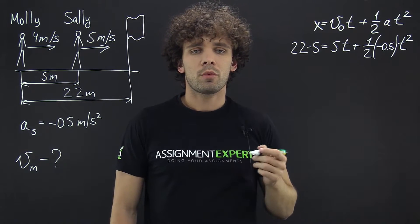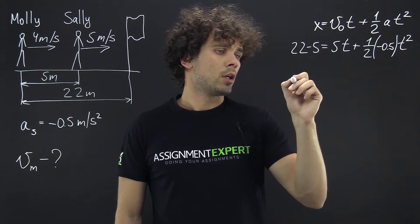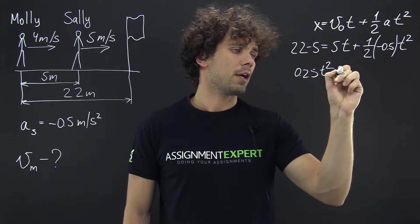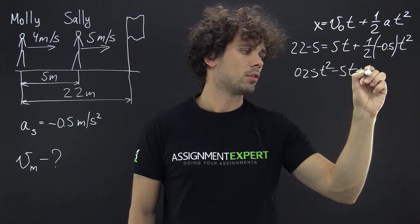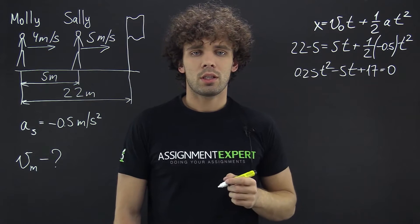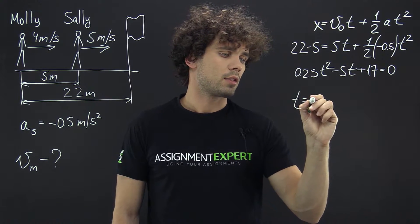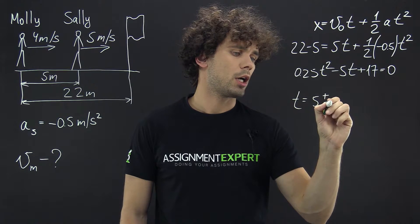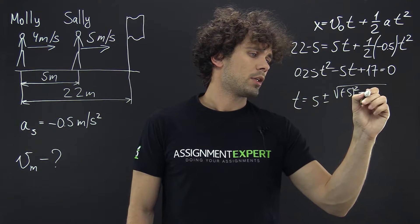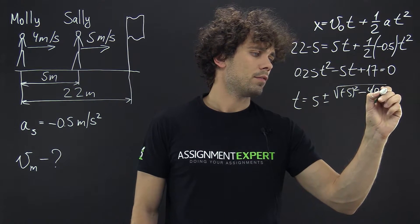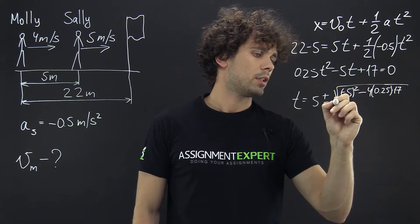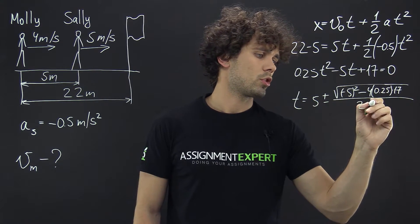From here we get the quadratic equation: 0.25T² − 5T + 17 = 0. Applying the quadratic formula, T equals 5 plus or minus the square root of (negative 5 squared minus 4 times 0.25 times 17), all divided by 2 times 0.25.